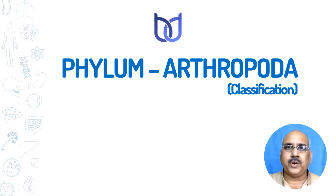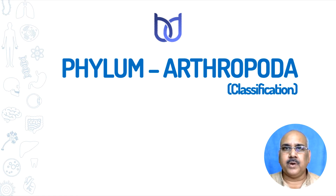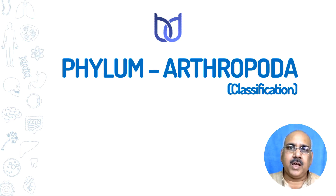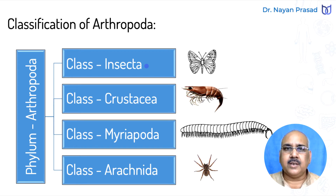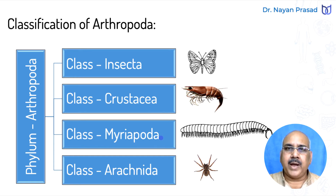Phylum Arthropoda is the largest phylum of the animal kingdom. This is one of the groups under invertebrates, and this group includes about 80% of all known animals. This phylum has been classified into four main classes on the basis of different features: class Insecta, class Crustacea, Myriapoda, and class Arachnida.